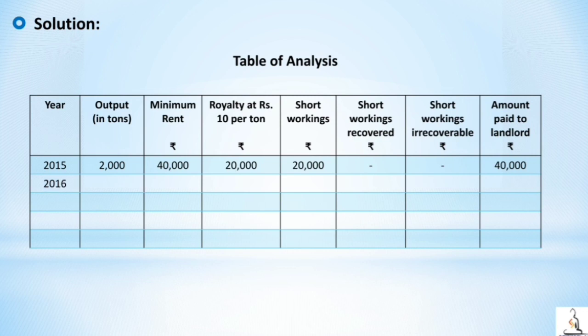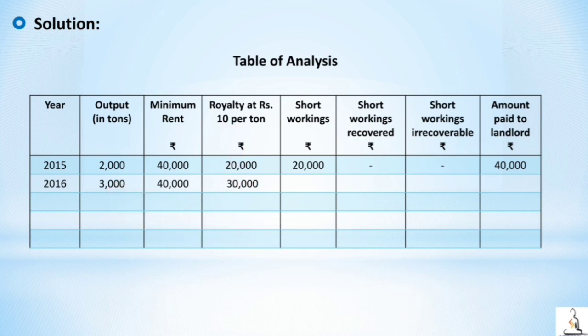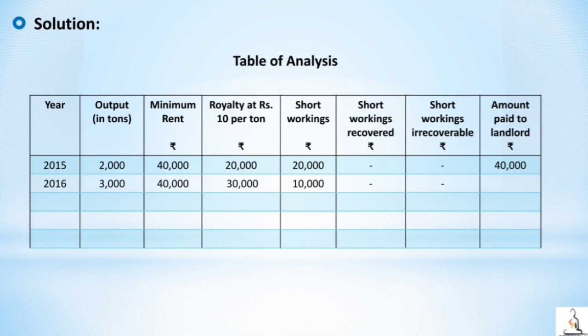In 2016, output is 3000 tons, minimum rent is 40,000, and royalty is 3000 × 10 = 30,000. Royalty is 10,000 less than minimum rent, so there is a short working of 10,000. Short working recovered and irrecoverable are nil. Amount paid to landlord is 40,000.